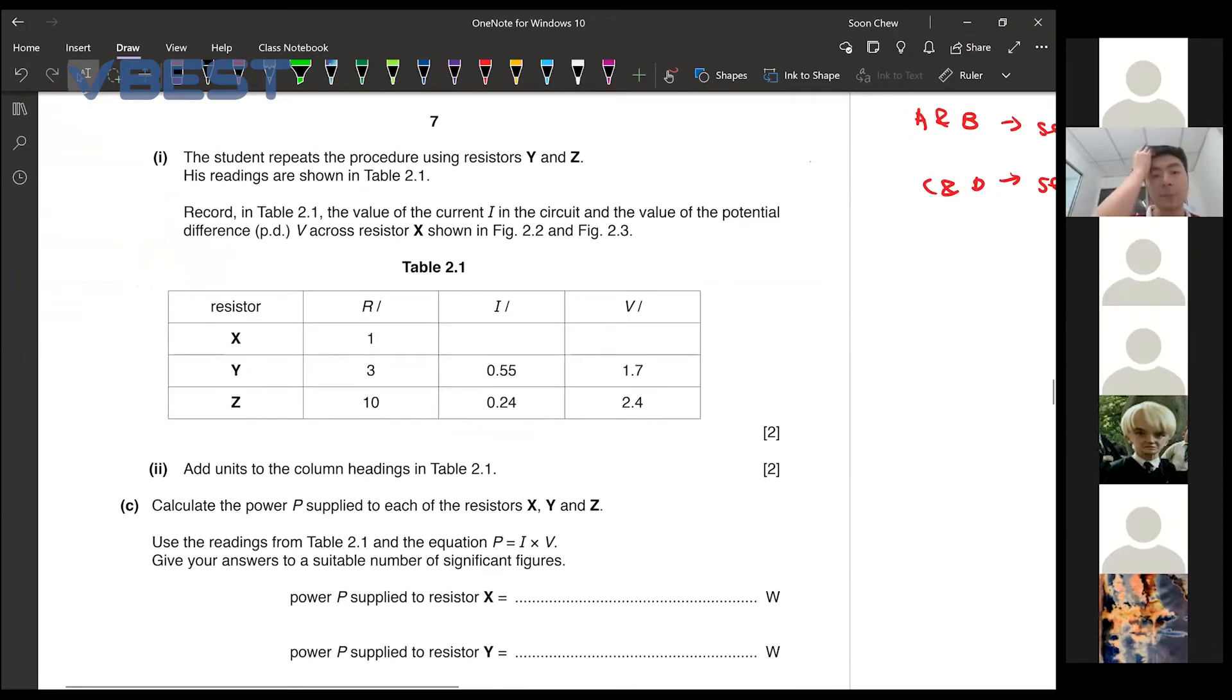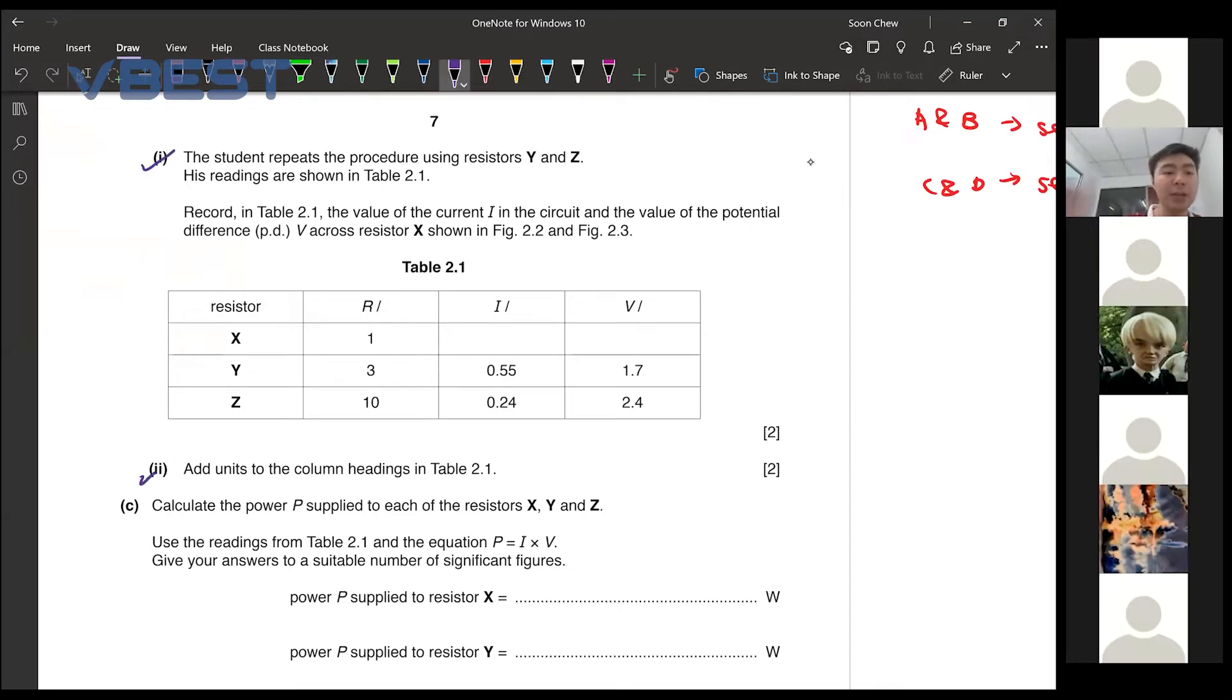They want us to complete the table over here. So every time, make sure you read all the questions. Now we need to complete the heading for each single one of them. Resistance is in ohms. Current is in ampere. And voltage, it will be in volts.